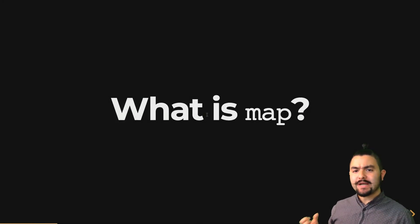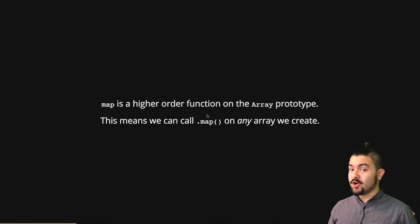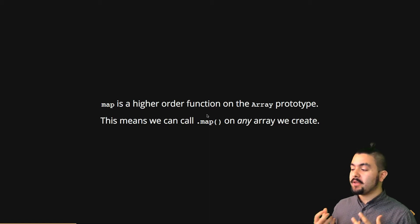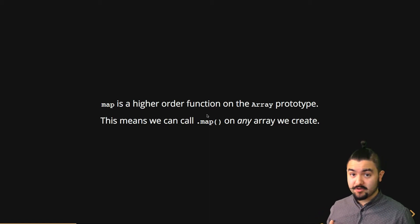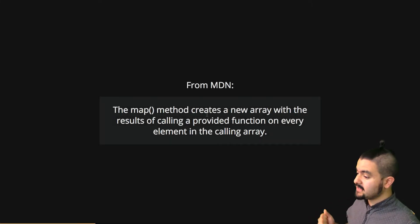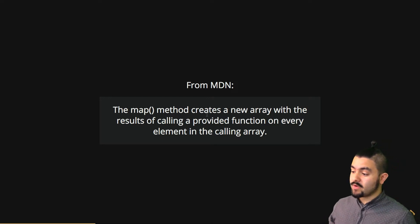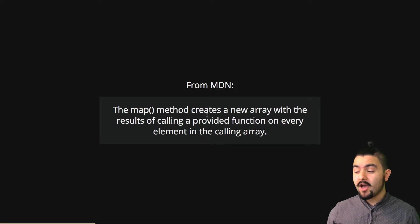What is map? Map is a higher order function on the array prototype. This means we can call map on any array that we create. If we look at the definition from the Mozilla Developer Network, it says the map method creates a new array with the results of calling a provided function on every element in the calling array.